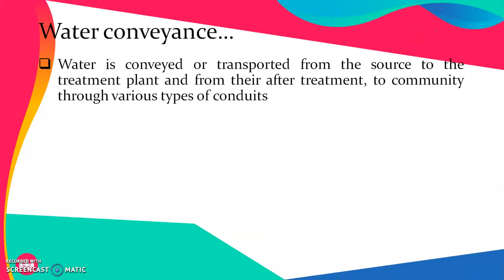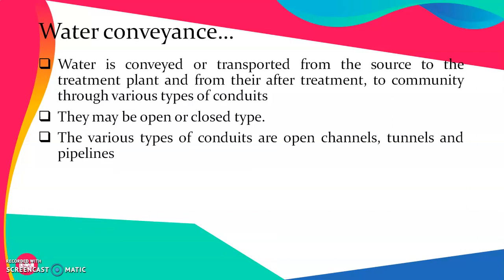Water conveyance. Water is conveyed or transported from the source to the treatment plant, and after treatment from the treatment plant to the community through various types of conduits. They may be open or closed types. Open type means the water is open to ambient atmosphere, while in a closed type system, the water is enclosed, like in the case of a pipe. The various types of conduits used are open channels, tunnels, and pipelines.